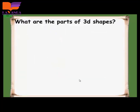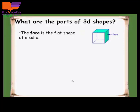What are the parts of the 3D shapes? In the 3D shapes I have a face. Each one of us has a face — the solids also have a face. This is the flat shape of the 3D shape, and it's called a face.